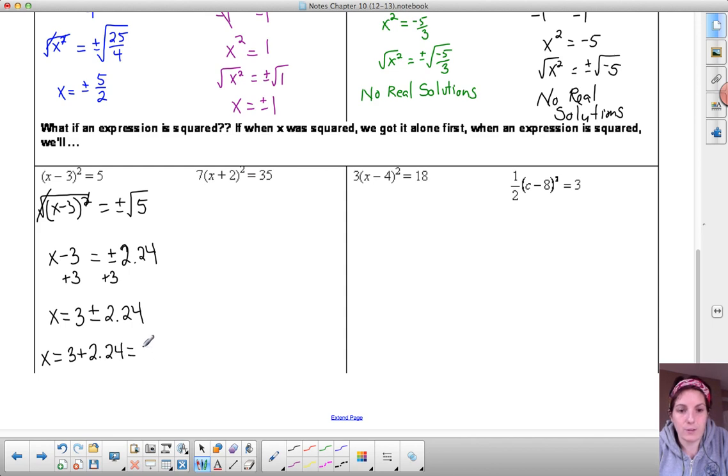I get my first zero or my first root of 5.24, but I also need to do subtraction: 3 minus 2.24. It's going to give me 0.76. So my two solutions are no longer going to be the exact same number. They're going to be a little bit different.